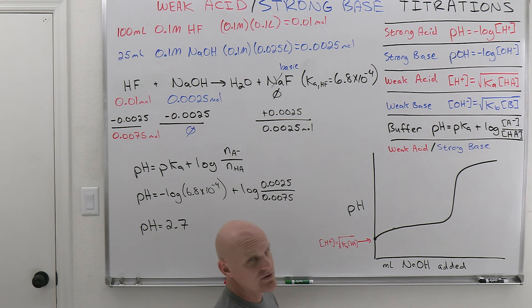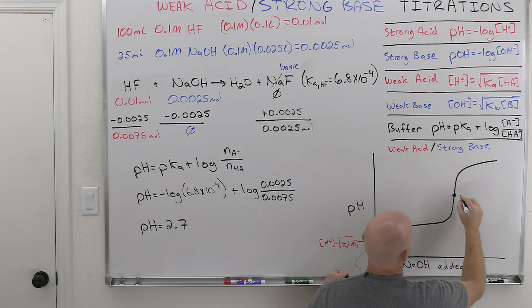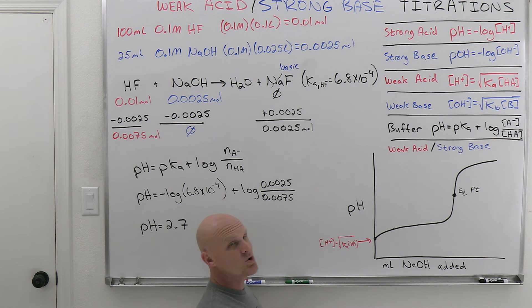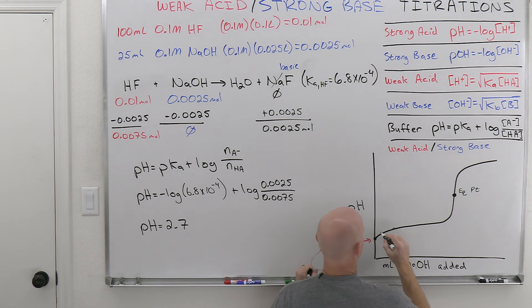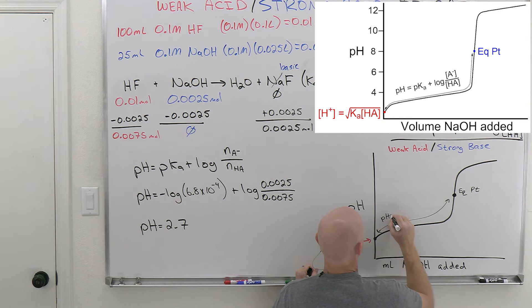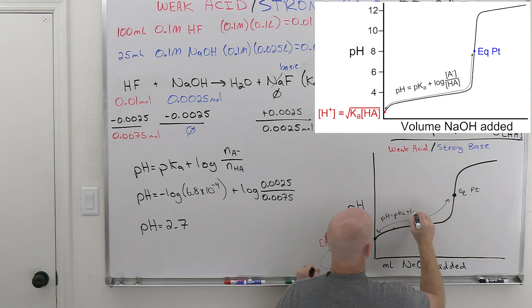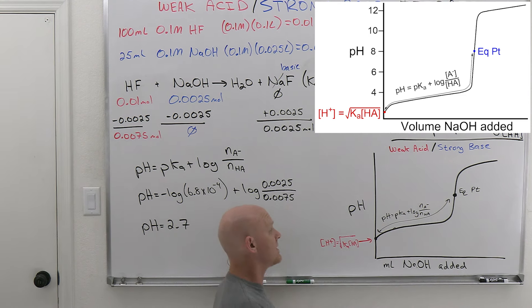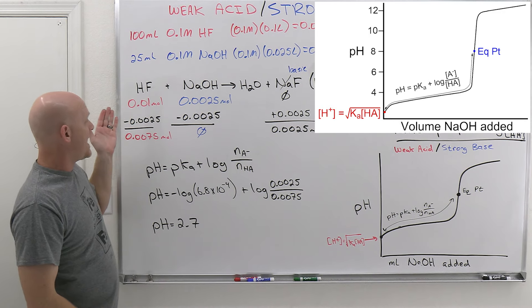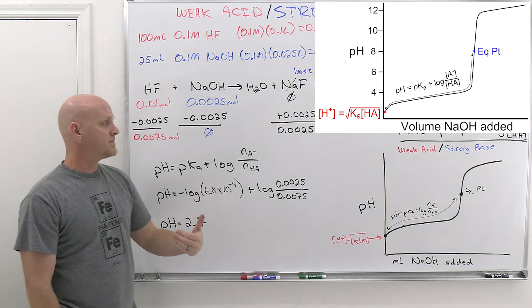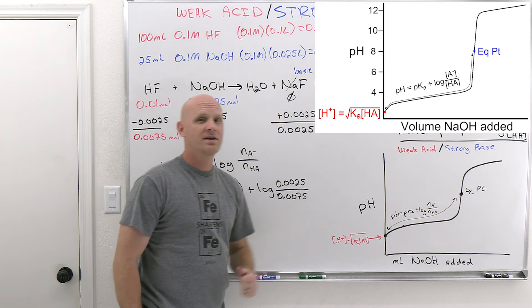We used the Henderson-Hasselbalch for that point. The equivalence point is up ahead, and after the initial point but before the equivalence point, anywhere in between — even outside the strict buffer range — you can still use the Henderson-Hasselbalch with a ratio of moles to calculate pH. You'll always have some HF left over and some conjugate base formed along the way.